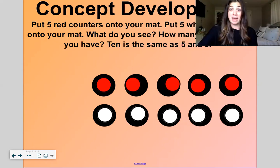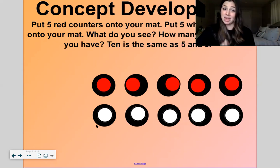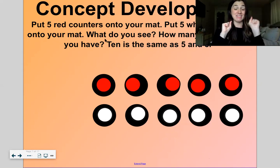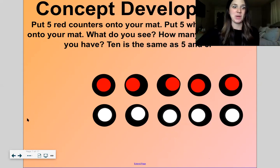I see five red on the top, just like we have with our five bricks on the top row. And I see five white counters on the bottom row. Five on the top, five on the bottom. Ten is the same as five and five.